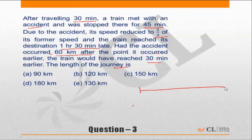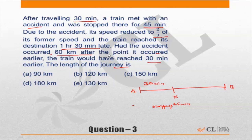A train is going from point A to point B. After traveling for 30 minutes, let's say the train covered this distance. The train met with an accident at point X and stopped there for 45 minutes. Due to the accident, its speed reduced to two-thirds — so if the original speed was S, the new speed becomes 2/3 of S. The train reached its destination 90 minutes late, meaning delayed by 90 minutes.